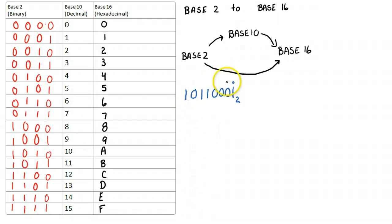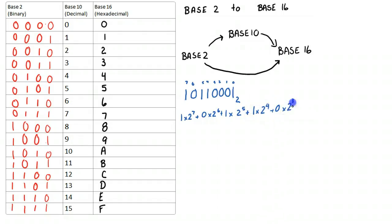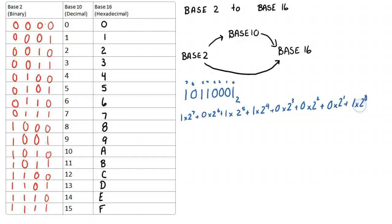If we number these off: 0, 1, 2, 3, 4, 5, 6, 7 — we're going to have 1 times 2 to the 7, plus 0 times 2 to the 6, plus 1 times 2 to the 5, plus 1 times 2 to the 4, plus 0 times 2 to the 3, plus 0 times 2 to the 2, plus 0 times 2 to the 1, plus 1 times 2 to the 0.